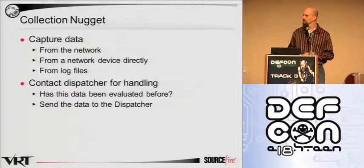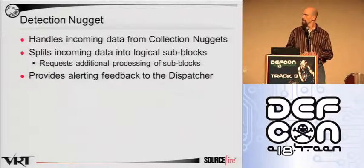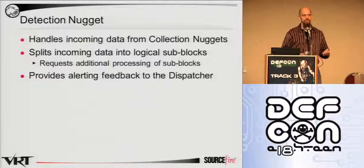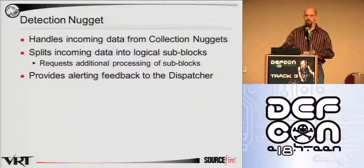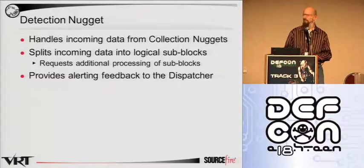If the data is not in the local cache, we'll send it to the dispatcher, which will then send it to the relevant detection nugget. Detection nugget can actually be a generic term — obviously there's attack data you look for, but we also have a detection nugget that will simply take data that's given, split it into logical subcomponents, and send them back to the dispatcher for further analysis by specialized nuggets.